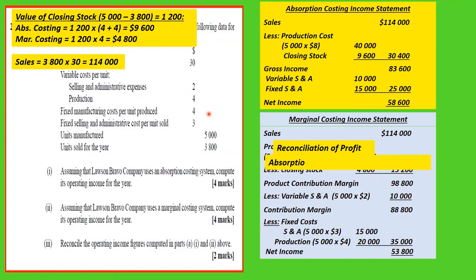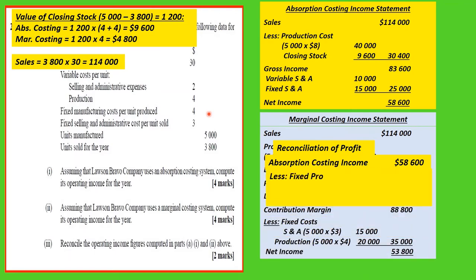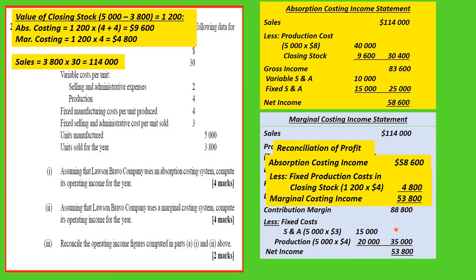To do the reconciliation: absorption costing income is $58,600, and from that we subtract the fixed production cost in the closing stock — 1,200 by $4 equals $4,800 — to arrive at the marginal costing income of $53,800. You could also start with the marginal costing income and add on the $4,800 to reach the absorption figure — either approach is acceptable.